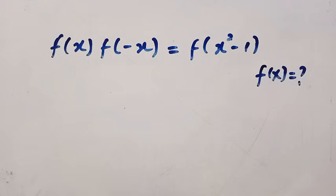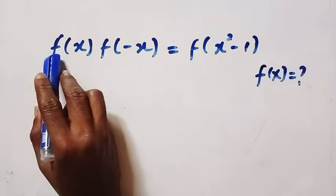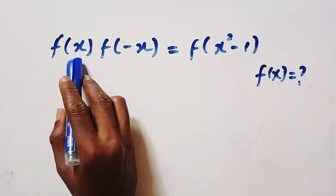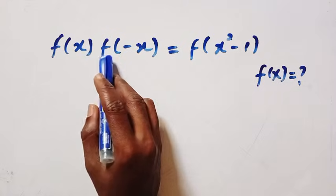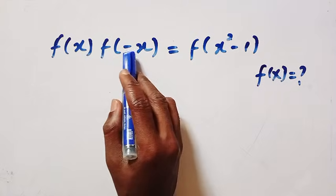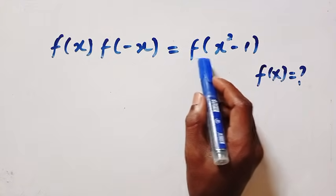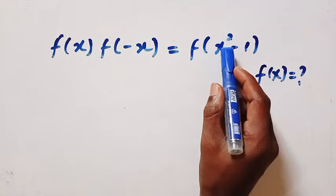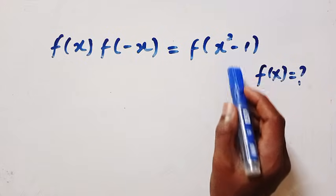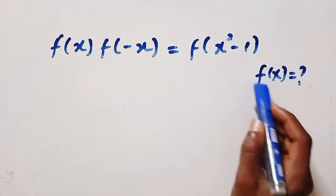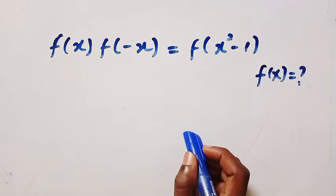Good day viewers, you are welcome. How to solve these nice functional equations: given that f(x) multiplied by f(-x) equals f(x² - 1), and you want to find f(x).